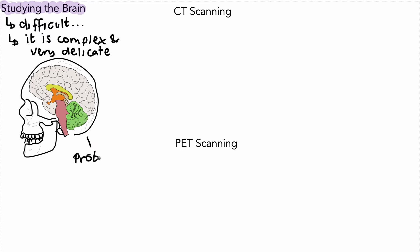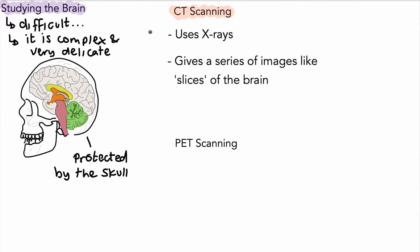The brain is also protected by the skull, which, as you know, is quite thick bone. However, there are ways of studying the brain. One is to use something called CT scanning. This is a method by which we use x-rays — these x-rays are fired at the brain and we get a series of images that are a bit like slices of the brain.